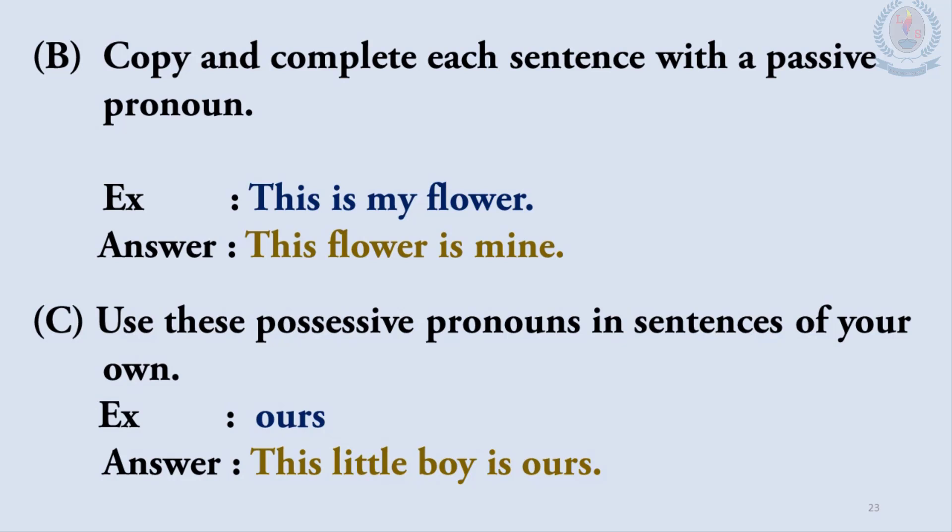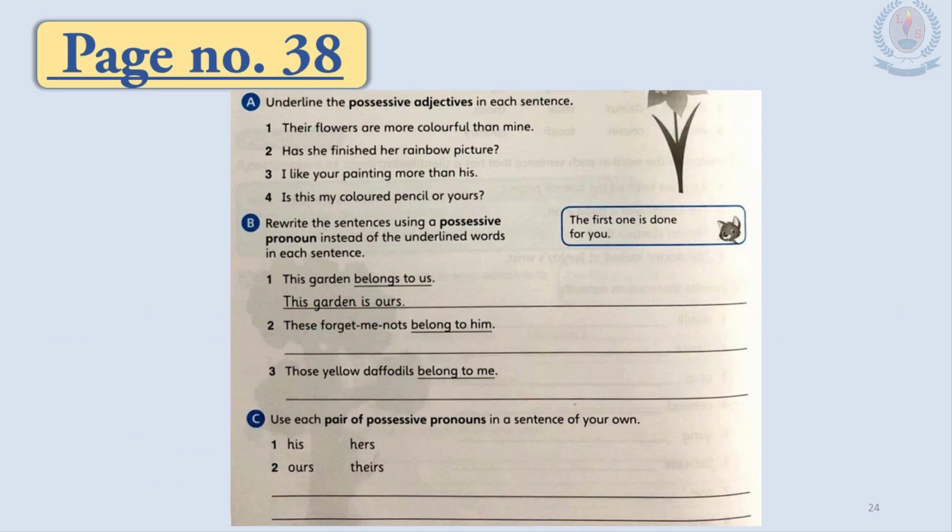Part C: Use these possessive pronouns in sentences of your own. It is time for you to make your own sentences. The first word is 'ours' — you can say: 'This little boy is ours.' Now turn to page number 38 in your workbook. Here you are given three activities: Part A — underline the possessive adjectives in each sentence; Part B — rewrite the sentences using a possessive pronoun instead of the underlined words; Part C — use each pair of possessive pronouns in a sentence of your own.